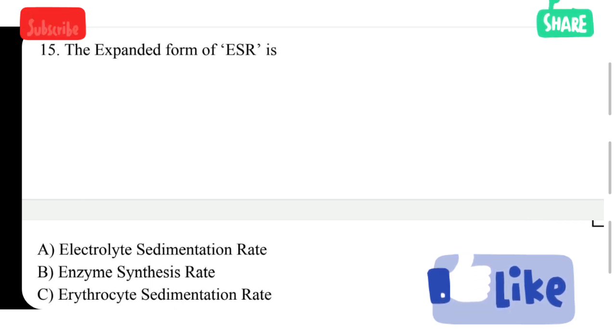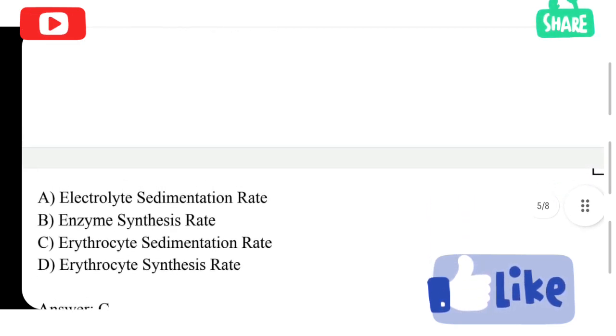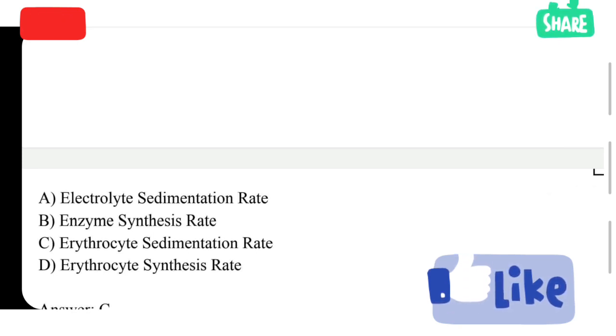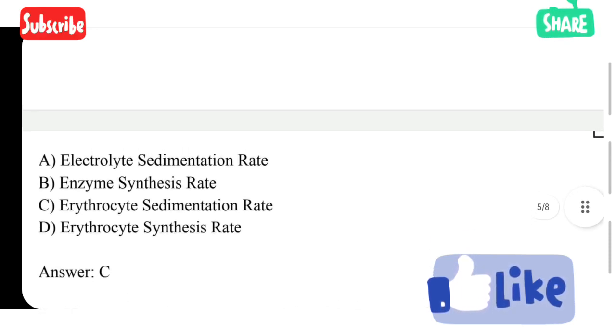The expanded form of ESR is option A erythrocyte sedimentation rate, option B enzyme synthesis rate, option C erythrocyte sedimentation rate, option D erythrocyte synthesis rate. The correct answer is erythrocyte sedimentation rate. ESR rate increases when there is blood infection or any other infection.